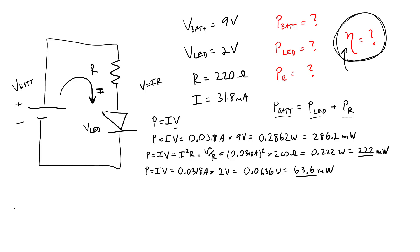So let's now calculate the actual percentage of power delivered to the resistor. I don't really have a good variable name for this, so I'm just going to call it percent of power delivered to resistor. That is going to be the resistor power divided by the battery power. So we have 222 milliwatts divided by 286.2 milliwatts, and that gives about 77 and a half percent.